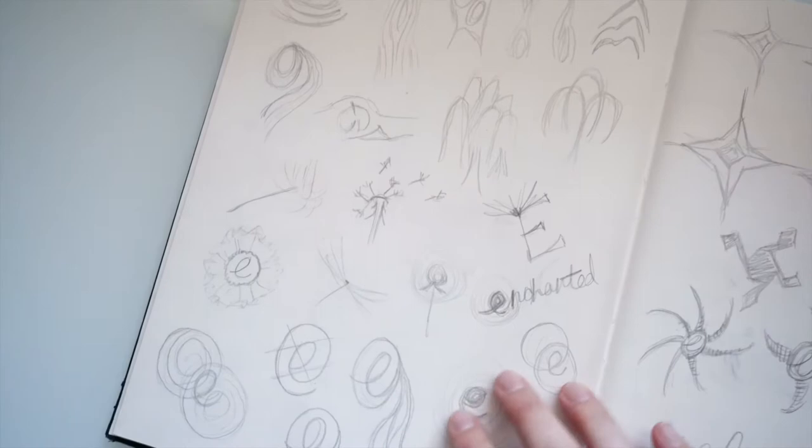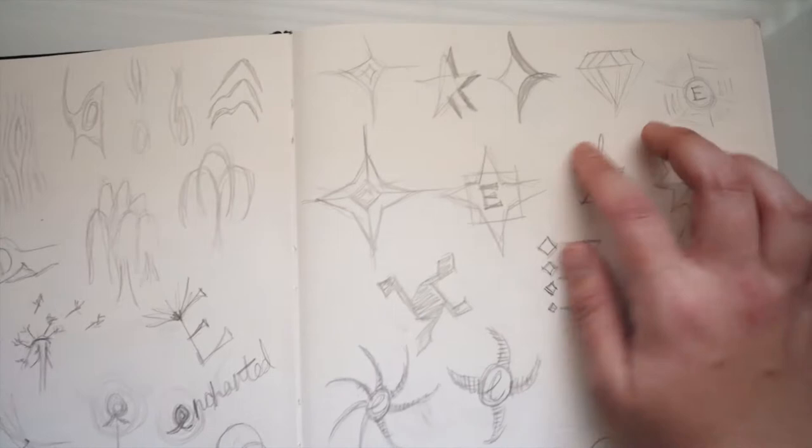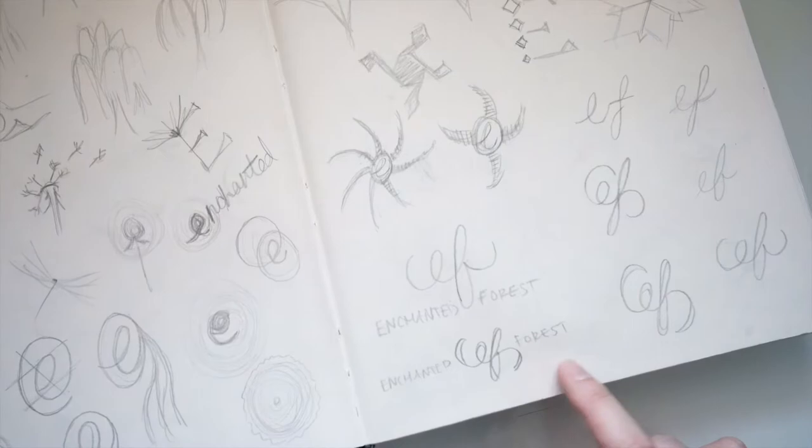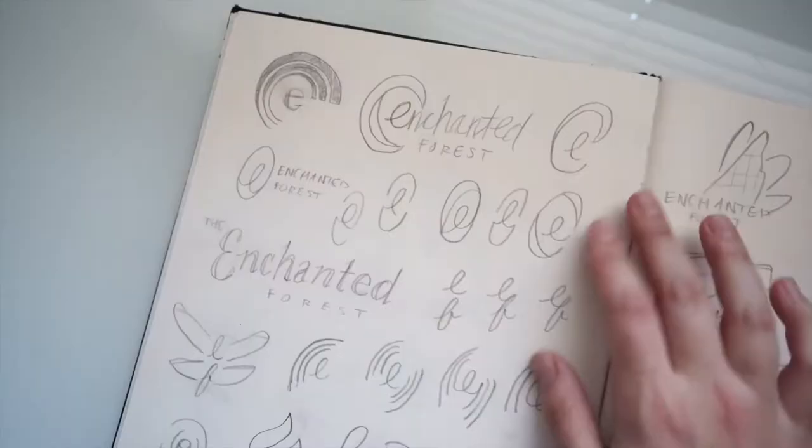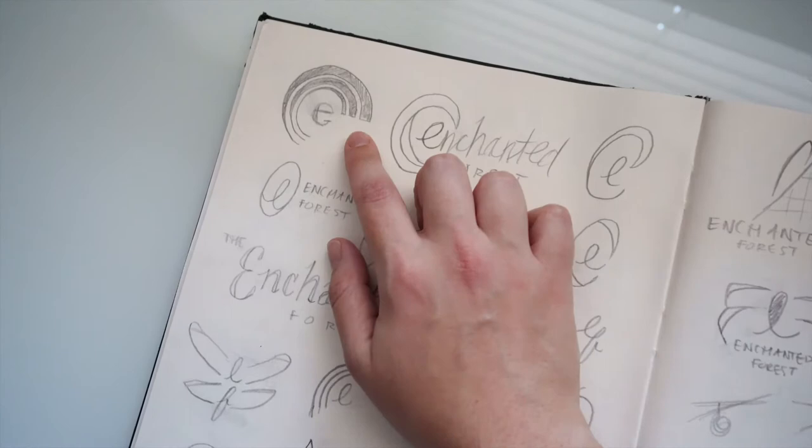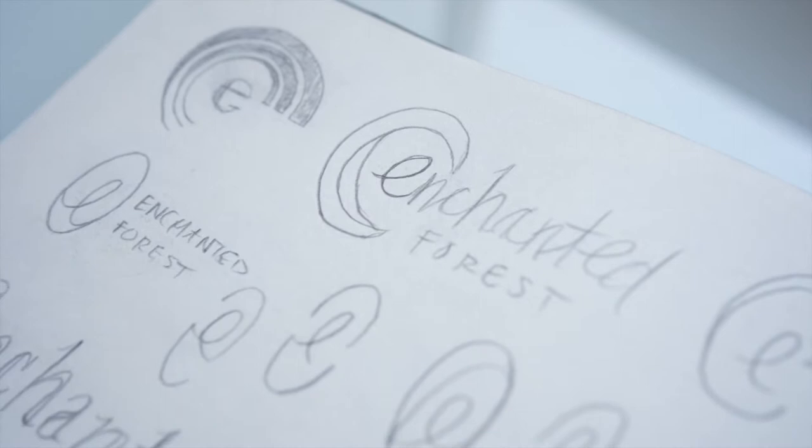Really focusing on the lowercase e, stars, diamonds, and combining E and F in this script. Or combining it with the entire name, like here, enchanted forest. More sketches. I don't really remember where this came about, but it's probably just something that evolved from other sketches.